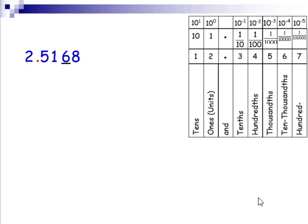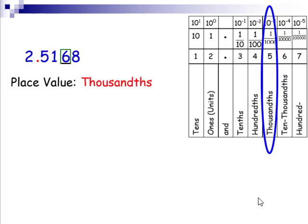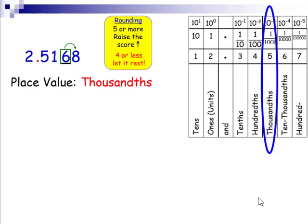Let's take a look at rounding. The first thing we want to know is the place value. In this particular case, that place value is the thousandths place, three digits to the right of the decimal. And when we're rounding, we like to use the rule, five or more, raise the score, four or less, let it rest. When we take a look at the number to the right, since eight is five or more, the six will become a seven.